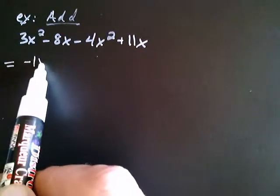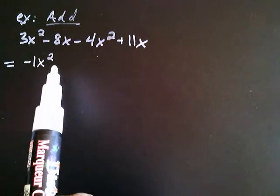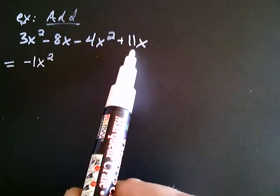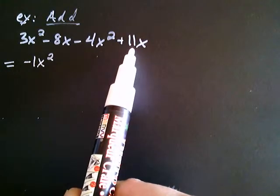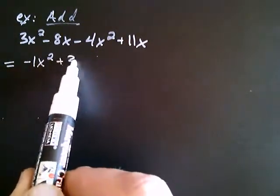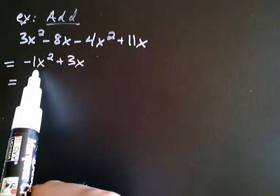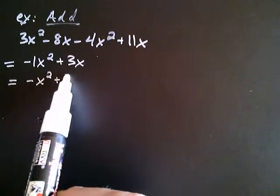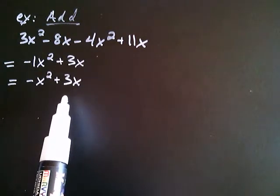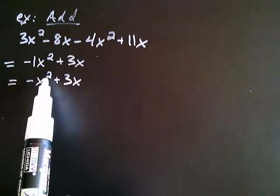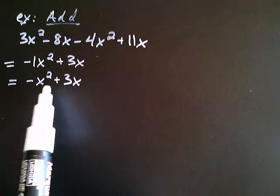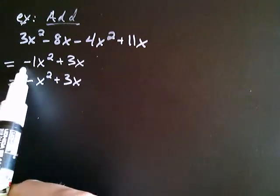So we get negative 1x squared. And likewise, we go on to the terms containing just x: a negative 8x and a positive 11x. You combine those like terms by adding their coefficients — negative 8 plus 11 is positive 3. Now, negative 1x squared is the same thing as negative x squared. At this stage, you want to ask yourself: can you combine these terms? The answer is no — this has x raised to the second power, and this has x raised to the first power. The only way you can add terms is if they're like terms, but these terms are not like terms. So this would be as far as we can go in this process.